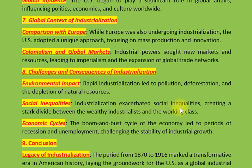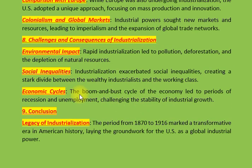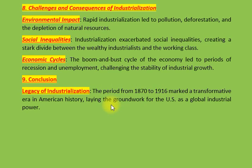The economic cycles of industrialization led to recession and unemployment, creating instability in industrial growth. This was a key result of the rapid industrialization process from 1870 onward.